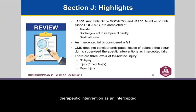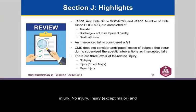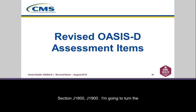In the highlights of this section: J1800 and J1900 are completed at transfer, discharge, and death at home. An intercepted fall is a fall. CMS does not consider anticipated loss of balance during a supervised therapeutic intervention as an intercepted fall. There are three levels of fall-related injury: no injury, injury except major, and major injury. That completes our section on J1800 and J1900. I'm going to turn the floor over to Charlotte, who will take you through the revised OASIS-D assessment elements.